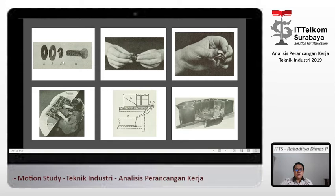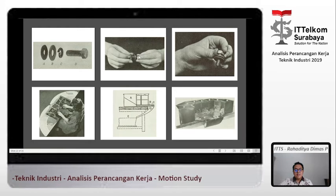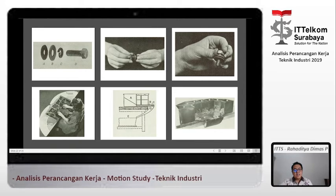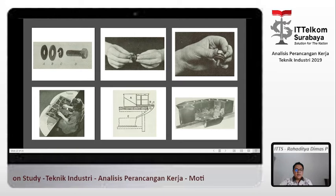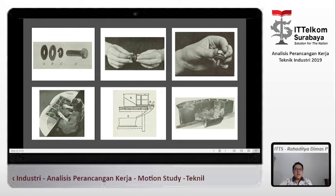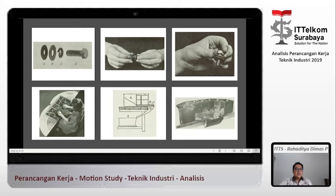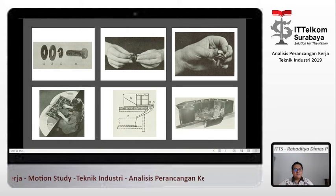Di gambar nomor 2, ada tangan kiri yang sedang memegang benda, yang kanan sedang melakukan operasi kerja. Sesuai kaidah tadi, seharusnya tangan kiri dan kanan sama-sama digunakan untuk bekerja. Di gambar nomor 4, kita lihat seorang wanita dengan meja yang sudah ditata sedemikian rupa. Part-partnya diletakkan di mana-mana supaya memudahkan dalam merakit. Tangan kiri dan kanannya sudah tampak seperti mirror — tangan kirinya di ujung sini, tangan kanannya di ujung sini, sudah as a reflection.